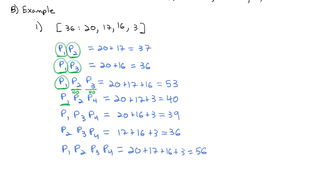In the next coalition of Player 1, 2, and 4: without Player 1, we only have 17 plus 3, which is 20 — not enough to meet quota, so Player 1 is critical. Without Player 2, we only have 20 plus 3, which is 23 — not enough, so Player 2 is also critical. If Player 4 is removed, Players 1 and 3 can meet quota with 37 votes, so Player 4 is not critical in this coalition.